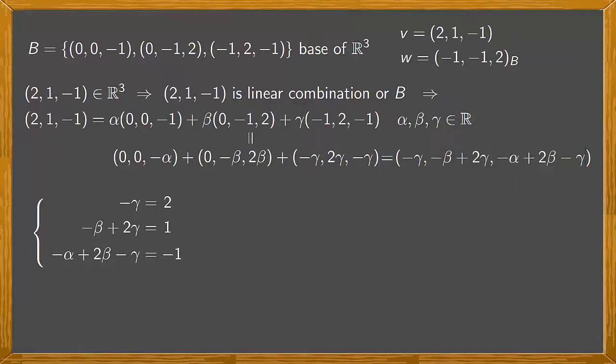To get the values of α, β and γ, we have to solve this system, which is easy to do. From the first equation, we get right away that γ is equal to -2. So we substitute -2 for γ in the second equation. There it is. Then we operate giving -β + 2 times -2, which is -4, equals 1. So -β equals 1 plus 4, which is 5. Therefore, β equals -5.